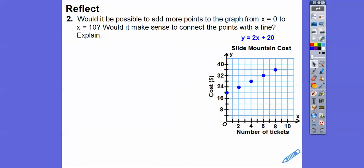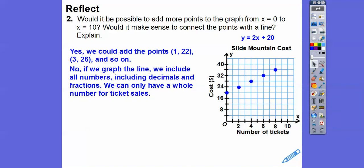Could we add more points to the graph from x equals 0 to x equals 10? Yes — we don't have to buy an even number of tickets. We could add 1 ticket for $22, 3 tickets for $26, and so on. But would it make sense to connect those points with a line? No, because connecting them includes all decimal values, and we can't buy a decimal of a ticket — like 2.35 tickets. It's either two tickets or three, so we only use whole numbers.